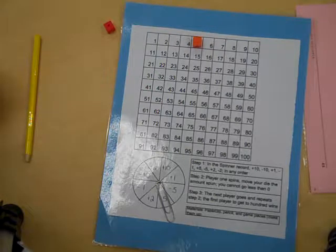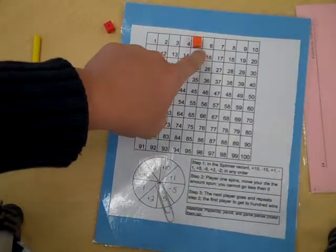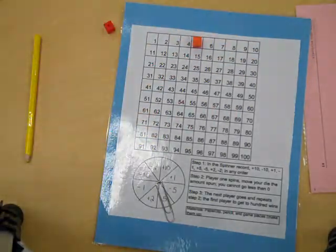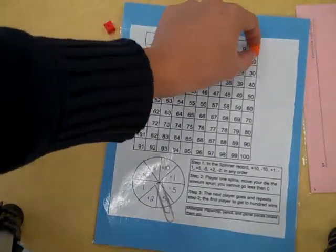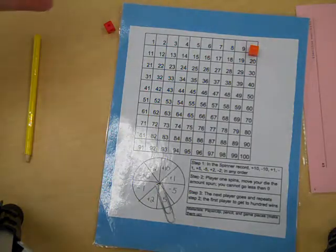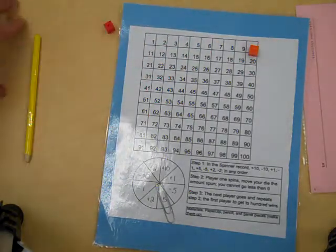What you want to encourage the students to do is start to realize how much 5 is, so that they got a 5 again, they don't have to count 1, 2, 3, 4, 5. They just go 5 and 5 is 10. That is the goal, but eventually they'll be working up towards it.